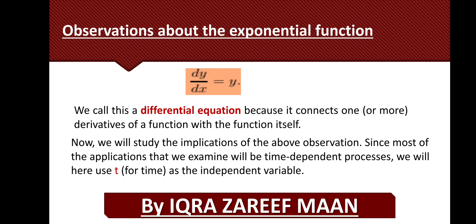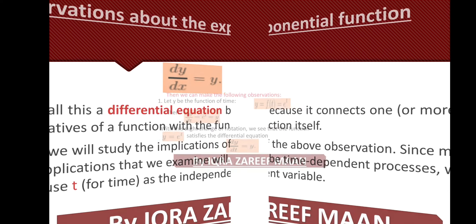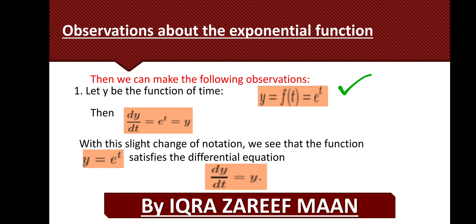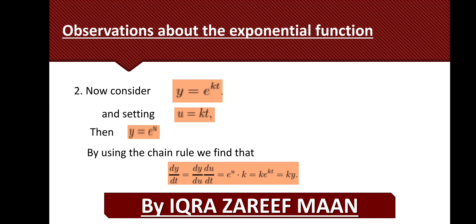Now we study the implication of the observation dy/dt = y. Since we are going to discuss exponential growth and decay, and both depend upon time, we now consider time t as the independent variable. We consider the function y = e^t; its derivative dy/dt = e^t, and again we get the relationship dy/dt = y, with t as the independent variable representing time.